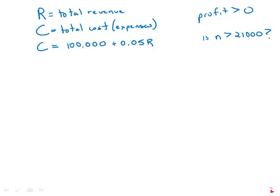First of all, I'm going to use R as the total revenue, C as the total cost or expenses, and we're told that C equals $100,000 plus 5% of revenue, plus 0.05R.